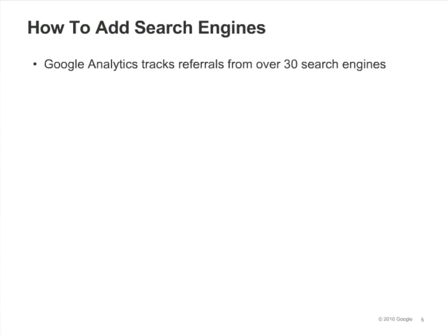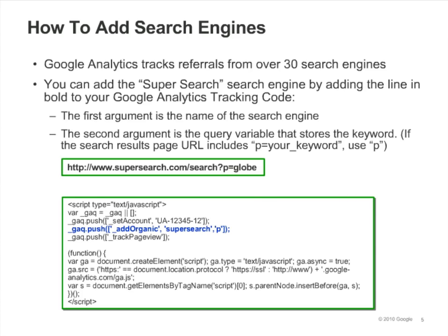Google Analytics automatically tracks referrals from over 30 search engines, but if you want to add a search engine, you can do it by calling AddOrganic in your Google Analytics tracking code. First, perform a search in the search engine and look at the URL of the search results page. In the URL, look for the keyword you searched for — it should be preceded by a letter and an equal sign. This letter is the query variable for the search engine. In the example, the query variable is P.